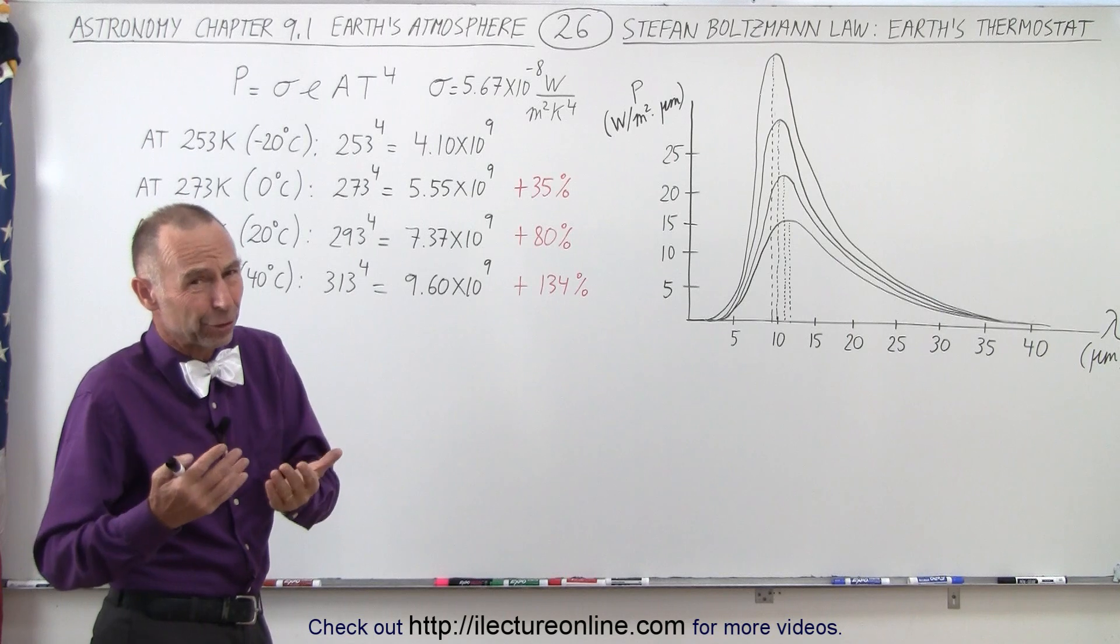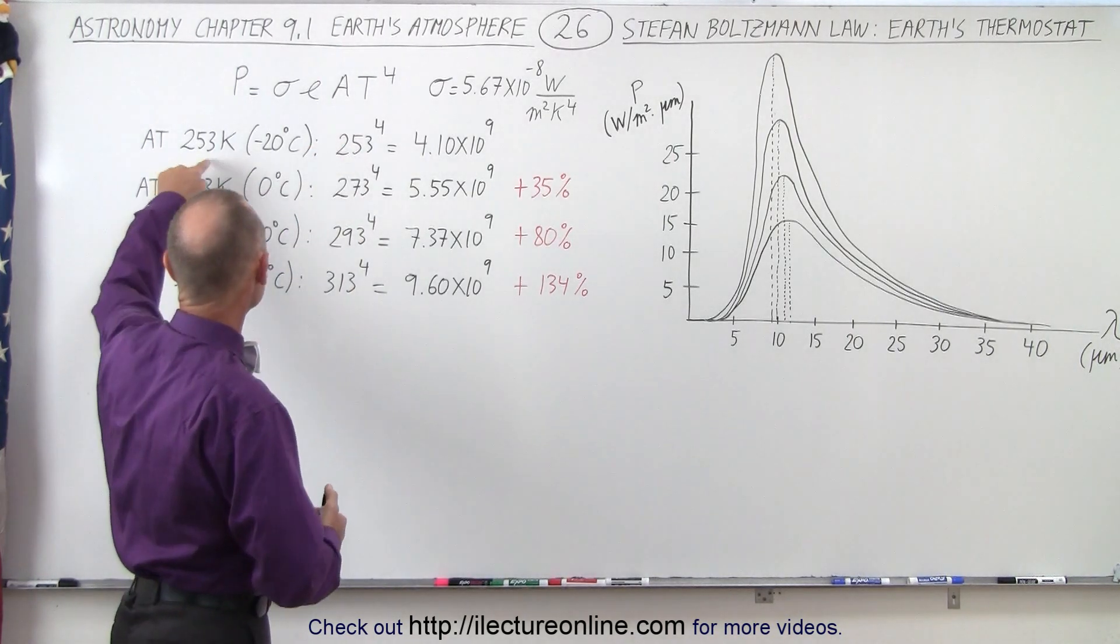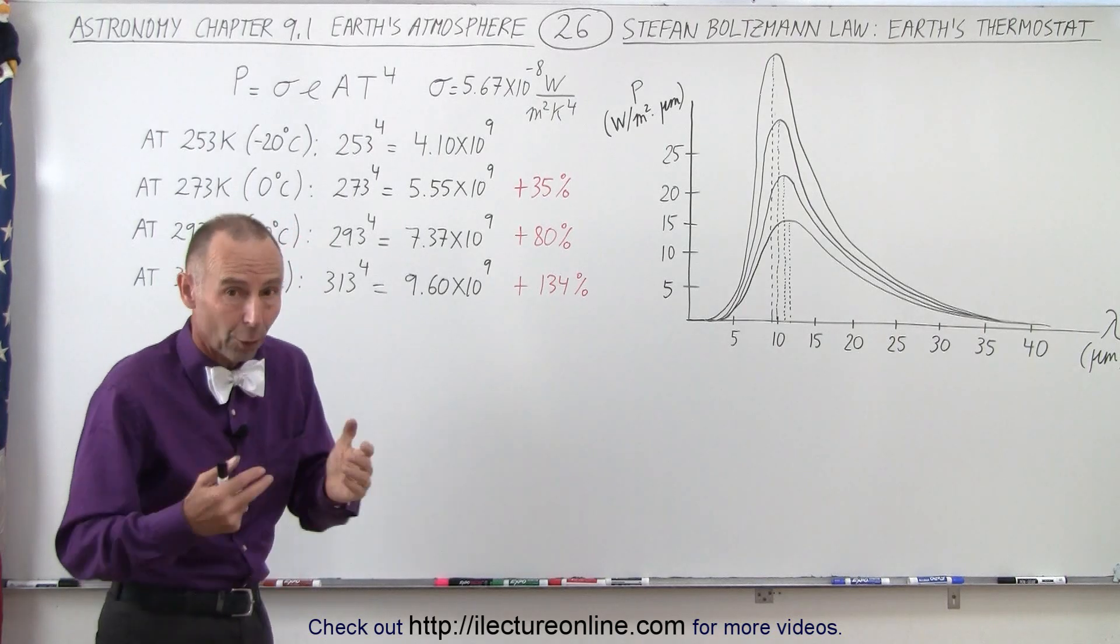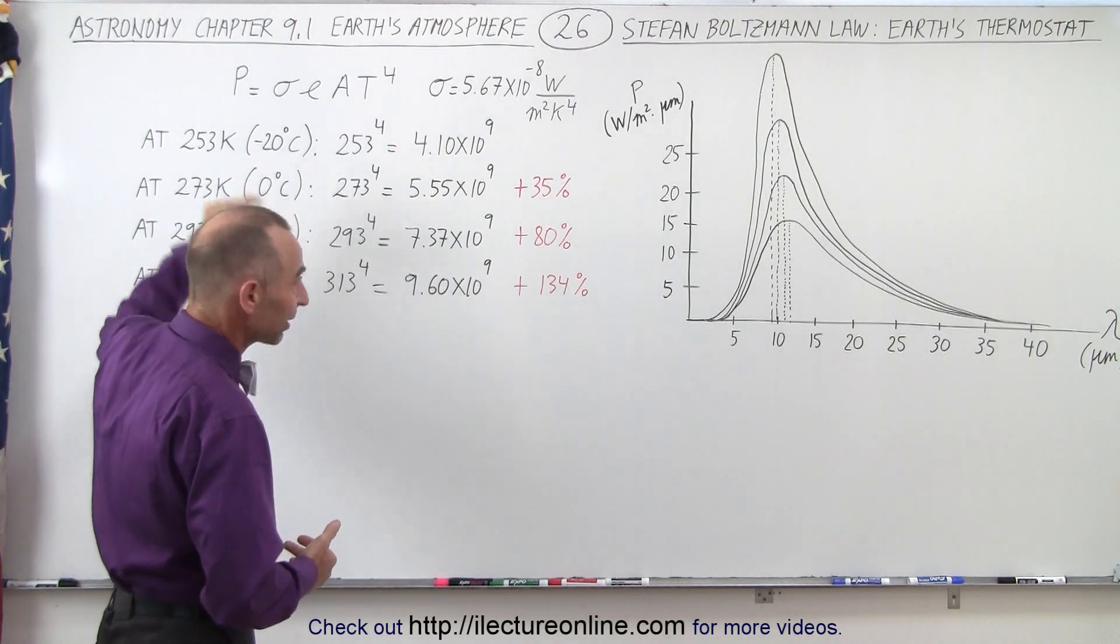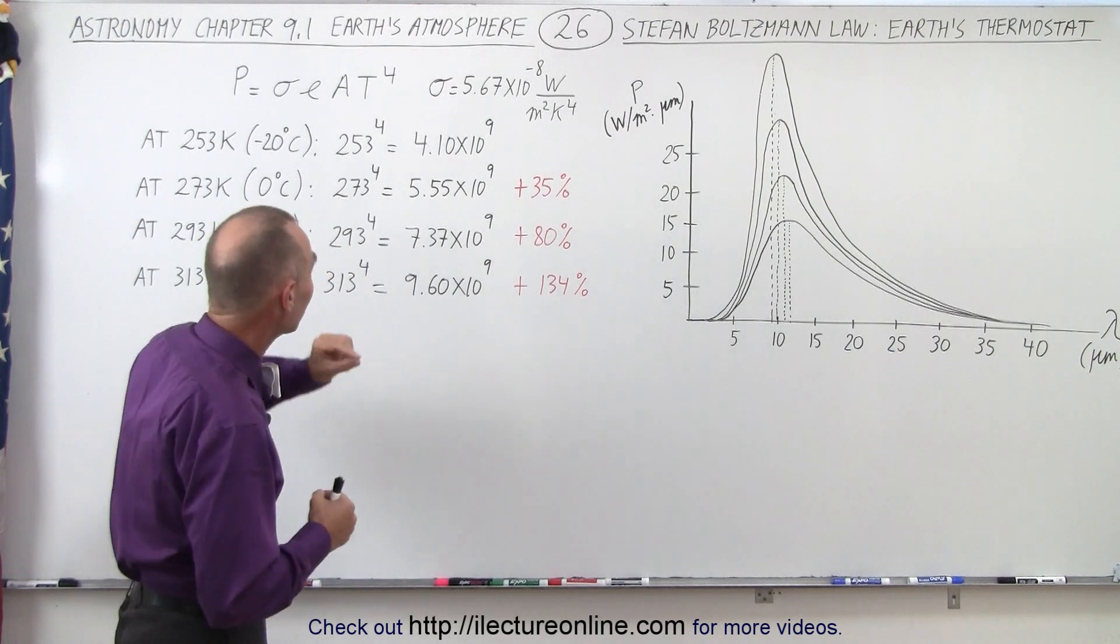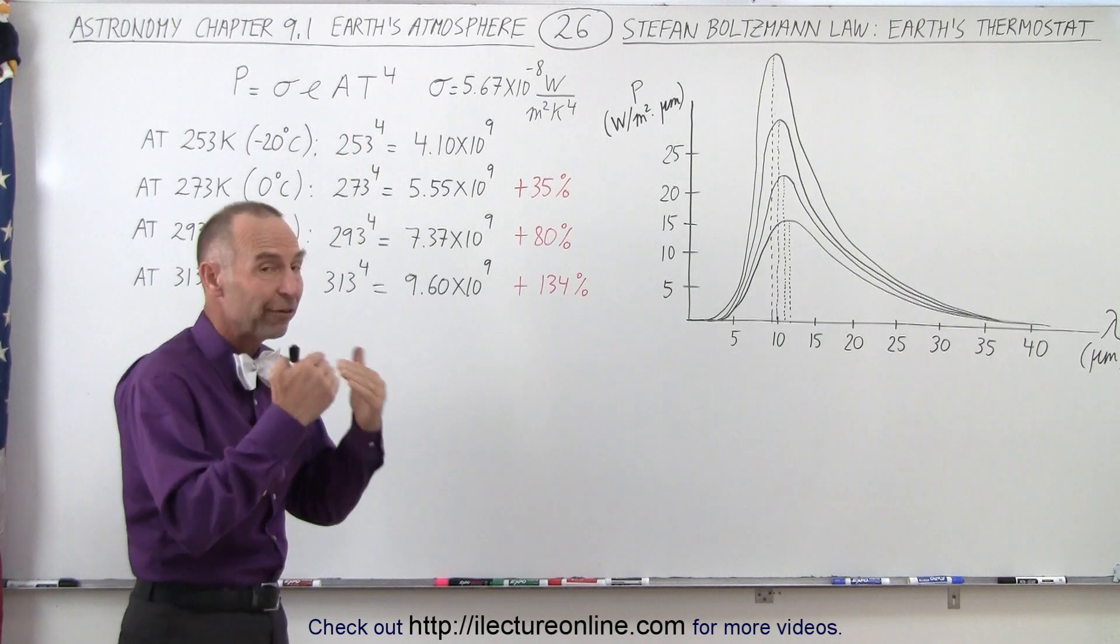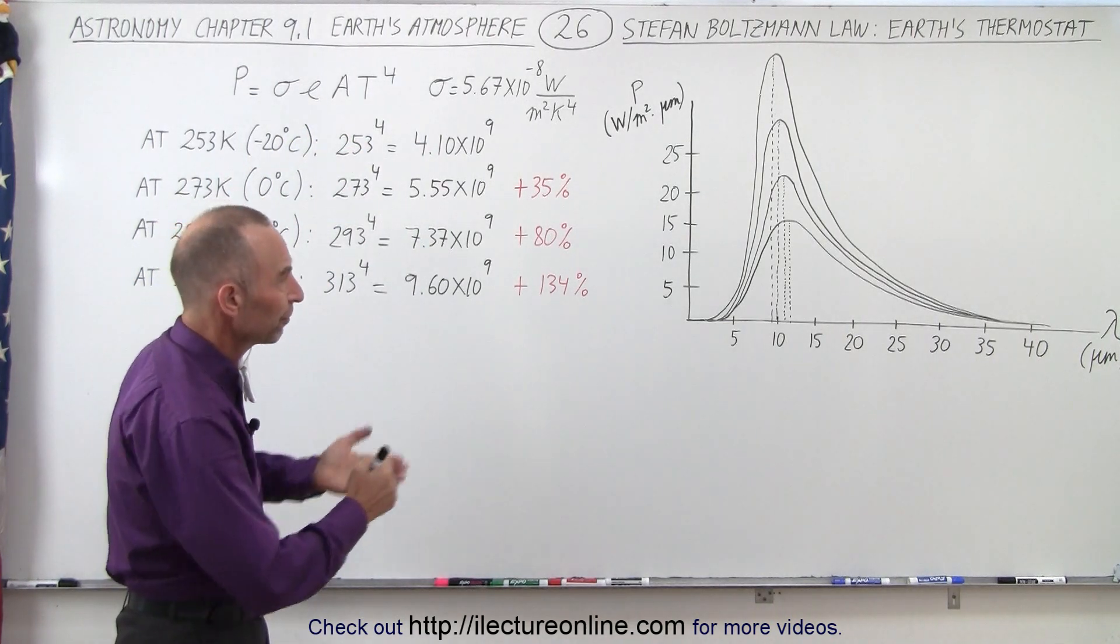Well on the Earth of course temperature never doubles from what it normally is because the temperature needs to be expressed in terms of Kelvin and hopefully it will never get to be about 500 Kelvin on the surface of the Earth, but the principle is still there in such a way that even small changes in the temperature will make large differences in the energy radiated from the surface.